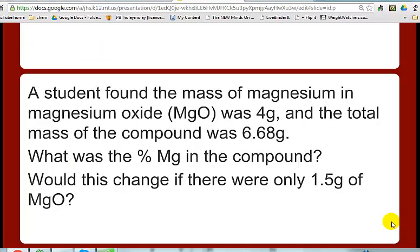So let's say a student found, we're going to do a little problem here. A student found the mass of magnesium in a magnesium oxide to be four grams, and the total mass of the compound was 6.68 grams. So just the magnesium was four grams, but the total mass was 6.68 grams. So what is the percent magnesium in the compound? That's one way we can get at what the ratio is.